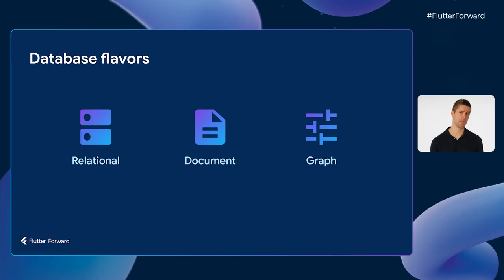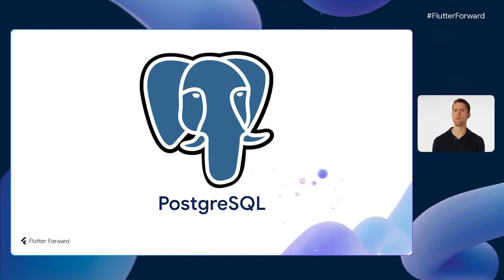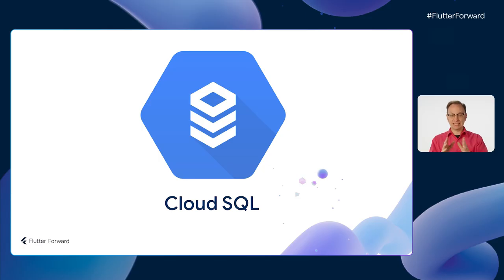There are several popular database flavors to choose from, including document databases, relational databases, graph databases, and some hybrids. However, unless you're sure you need a specific one, I always recommend developers start with a relational database like Postgres, which is what Martin and I will use for our location lookup service. Google Cloud's product for relational databases is called Cloud SQL, and it lets you pick between Postgres, MySQL, or SQL Server.